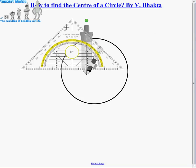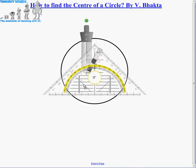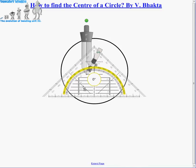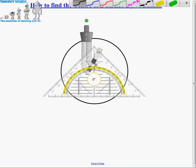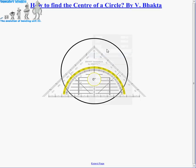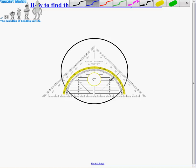I'm going to move my set square down. What I'm going to do is draw a chord. A chord is a line that runs across from one point of the circumference to the other, but not running through the center of the circle. So let's draw a chord - I'm going to use a blue line to draw the chord right the way across there.